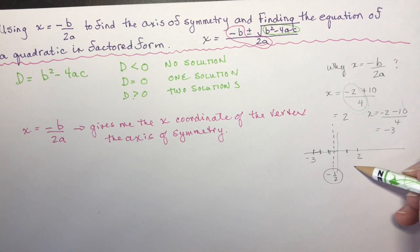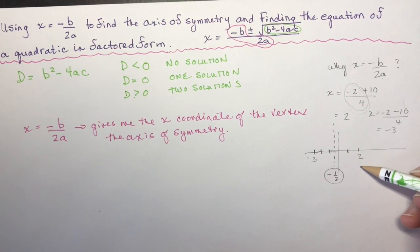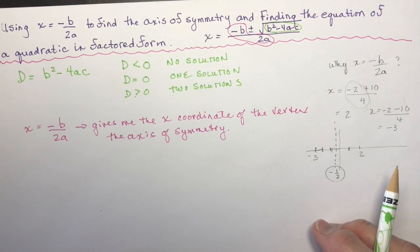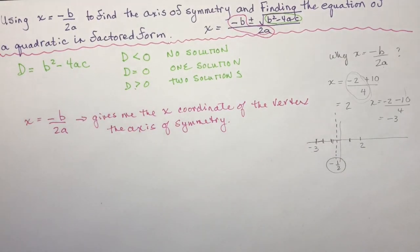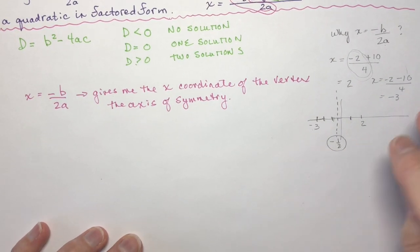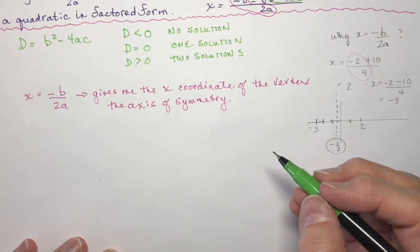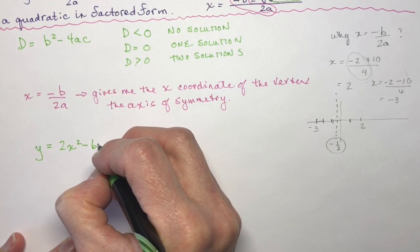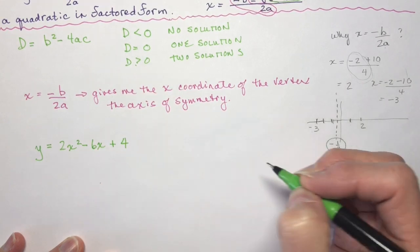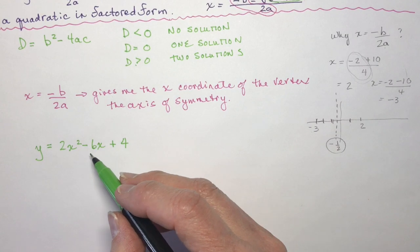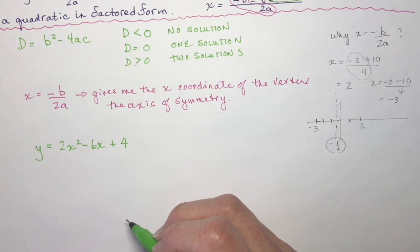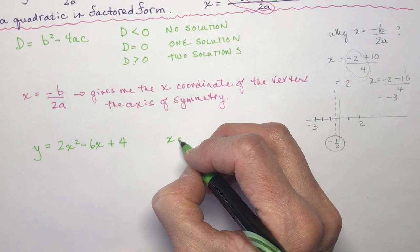You could use minus b over 2a as the x-coordinate of the vertex to put the equation into vertex form. So if you have a hard time with completing the square, you can use that as another method to find the equation in vertex form. Let's try an example: y equals 2x squared minus 6x plus 4. If I use x equals minus b over 2a...